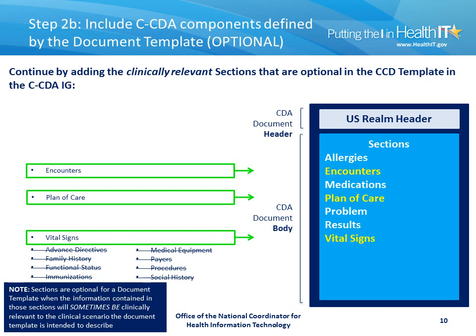The next step is to continue by adding the clinically relevant sections that may be optional in the template definition in the Implementation Guide. In this case, we'll be adding an Encounter section, the Plan of Care section, and a Vital Signs section. We're choosing to ignore the other optional sections, deeming them not clinically relevant at this point. Sections are generally optional in the document template definition where the information will only sometimes be clinically relevant to the scenario the document is intended to describe.